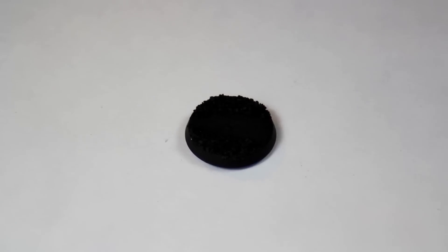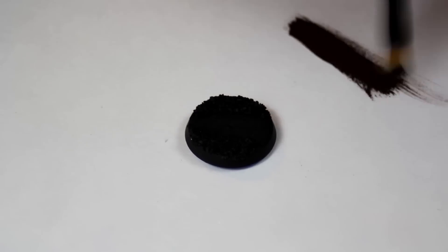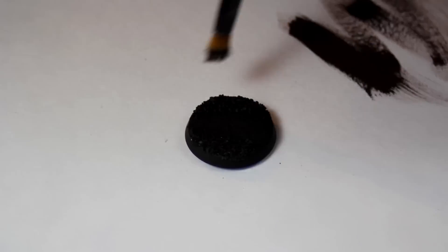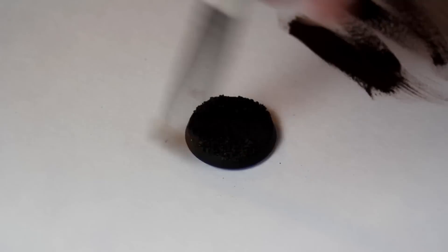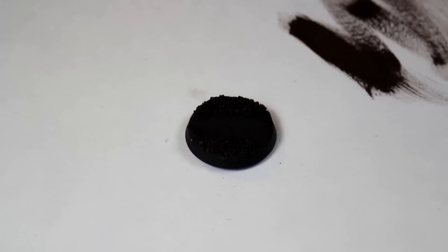Then I primed the base black. Then I dry brushed it with Vallejo Game Color Charred Brown. Now I did a pretty light dry brushing. We're trying to keep the black color to it.